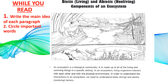An ecosystem is a biological community. It is made of all the living and non-living things in a specific setting. In an ecosystem, living organisms interact with each other and with the physical environment. In order to understand the interactions in an ecosystem, we need to understand biotic (living) and abiotic (non-living) factors. Go ahead and pause the video, write the main idea, and remember to circle important keywords.